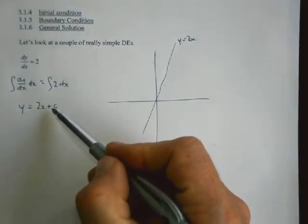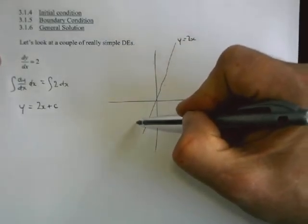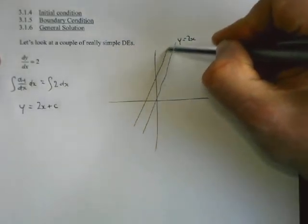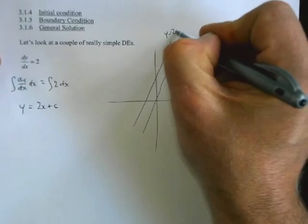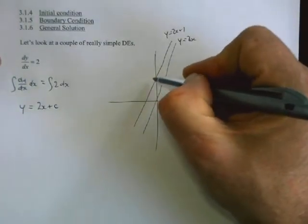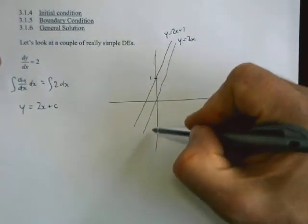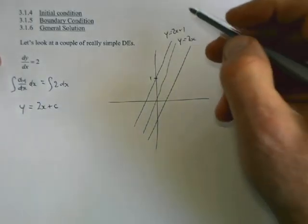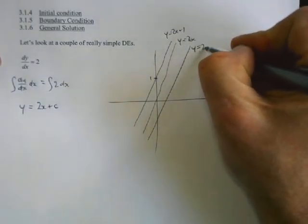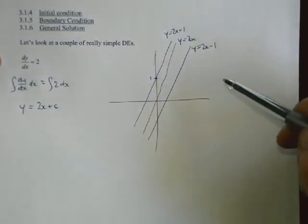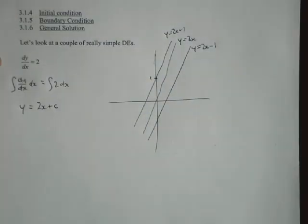So that would be the situation where C was equal to 0. Whereas if we did something where C was equal to 1, we'd end up with this line here. Or if we did C equals negative 1, we'd end up with a line more like this one. That's supposed to be a family of parallel lines.